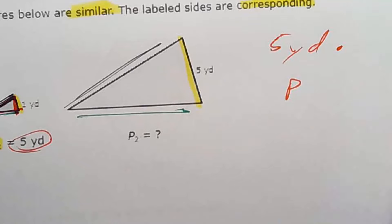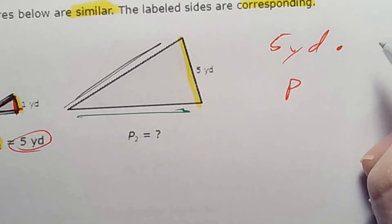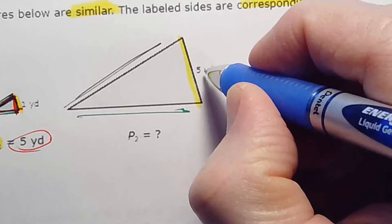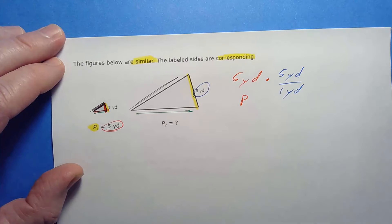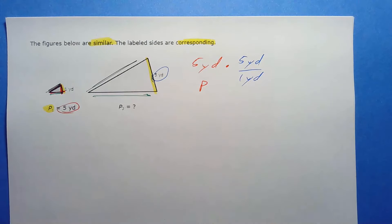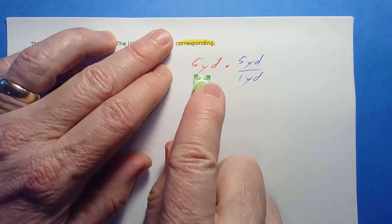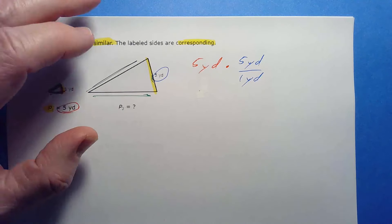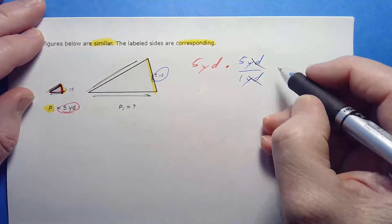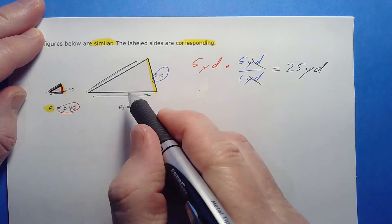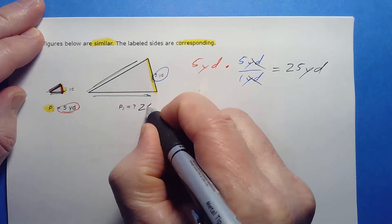We multiply by the ratio of the two sides, which is five yards over one yard. Note those two fives are coming from different places in the problem. There are yards units that cancel, so we just get five times five over one, which is 25 yards. So the perimeter of this bigger triangle is 25 yards. This works for any shape.